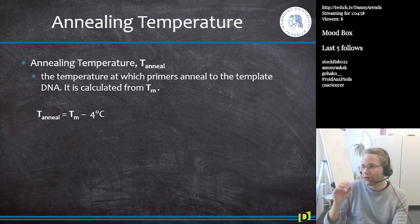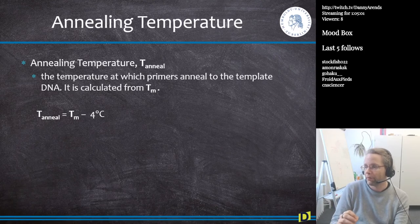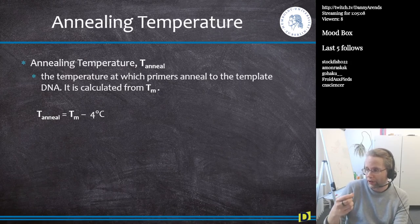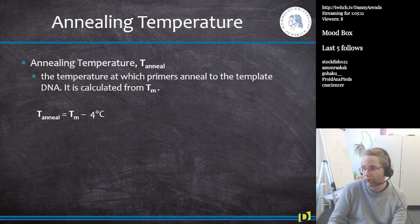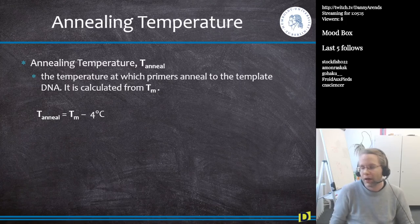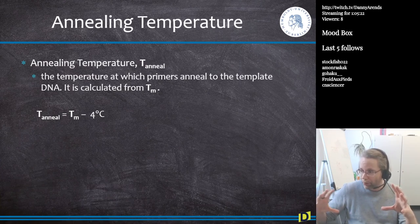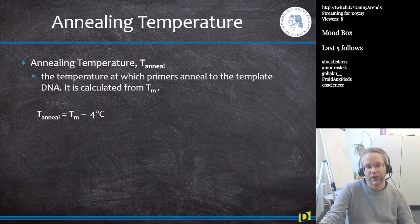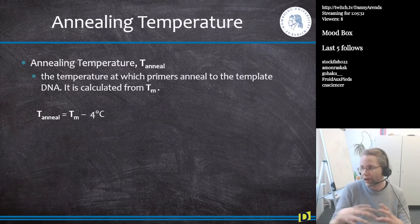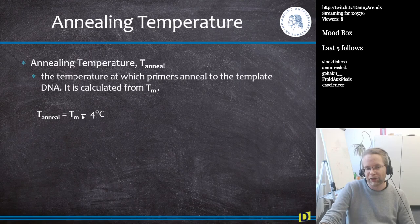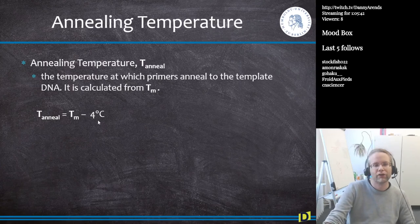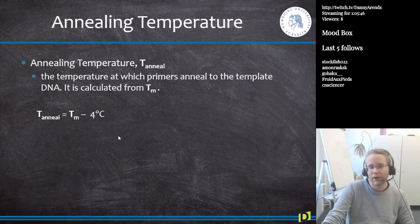The annealing temperature is the temperature at which primers bind to the template DNA. If I know the melting temperature of a primer — which I can calculate from the formula — then by definition the annealing temperature is the melting temperature minus 4°C. At Tm, half the DNA is single-stranded; a little below that, things start becoming double-stranded again, so Tm minus 4°C is where binding happens.